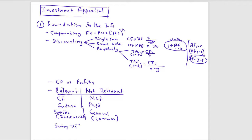Opportunity cost must also be considered. For example, if you take labor from an existing project for a new one, there will be a loss of contribution from the existing project. That loss arises because of your new investment, so opportunity cost is treated as a cash outflow. Committed costs should not be included in the calculation.